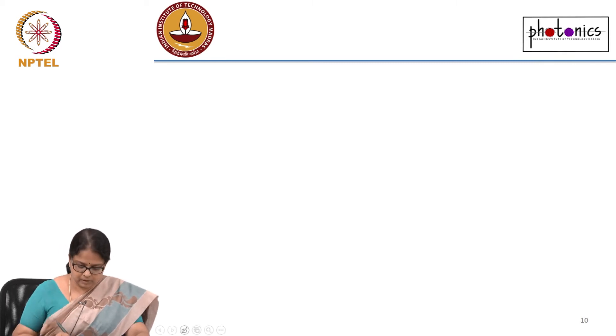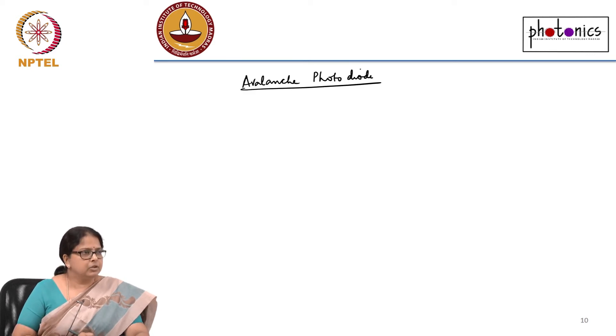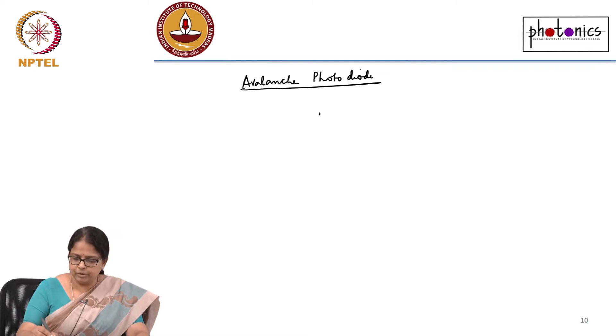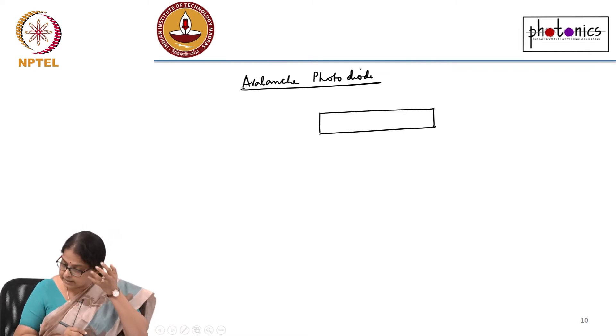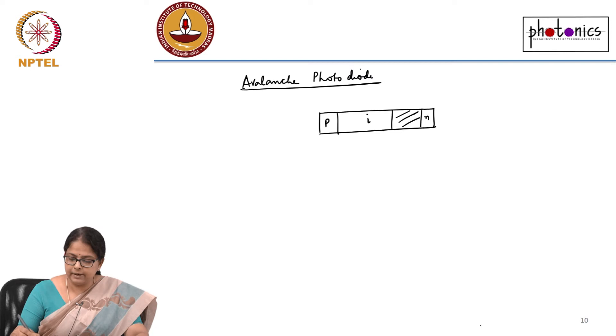That is the design of what is called an avalanche photodiode. In an avalanche photodiode what you do is you adjust the doping. It is a heavily doped system where you have P region, you have N region, you have the intrinsic region and then you have a heavily doped region here and this is what is called as a multiplicative region.